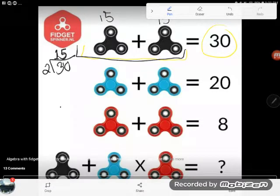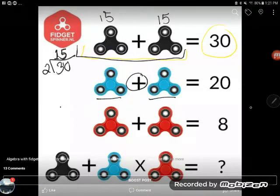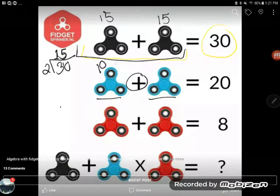I'm gonna do the same thing here with the next one because once again we see two blues adding together to make 20. Two blues make 20. Well I could take that 20 and divide it into two equal groups. 20 divided by 2. I don't have to do any side work for that one. Those must be 10 each.